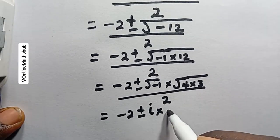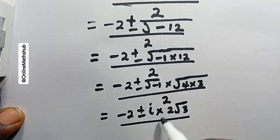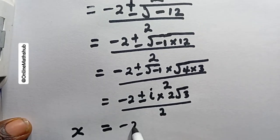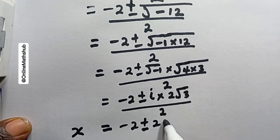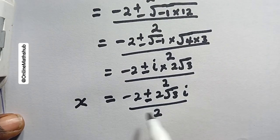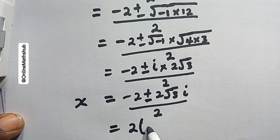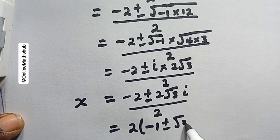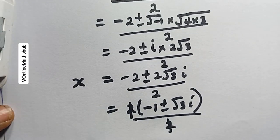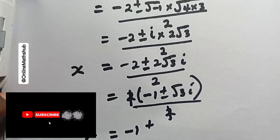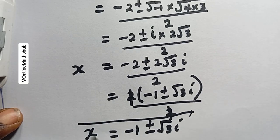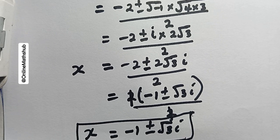So I have minus 2 plus or minus i times 2 times the square root of 3, all divided by 2. Factoring out 2 from the numerator gives 2 times the quantity minus 1 plus or minus root 3 i, divided by 2. The 2's cancel, so the next two values of x are x equals minus 1 plus or minus root 3 i.